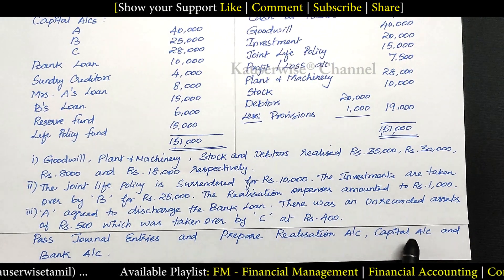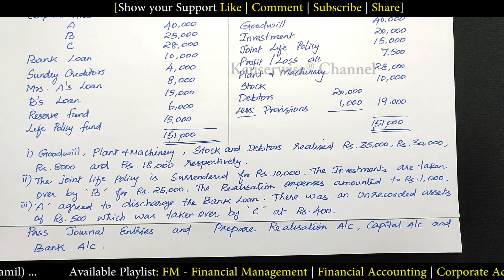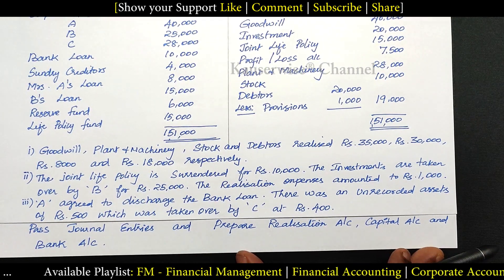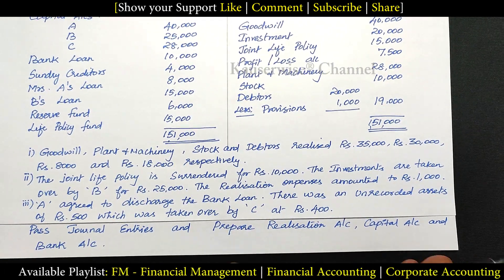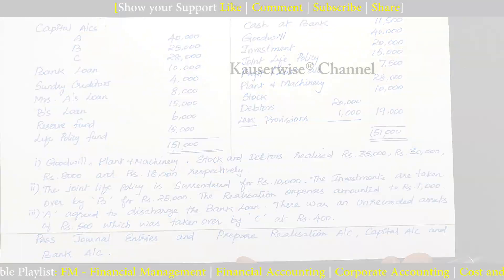With this information, they are asking us to pass journal entries and prepare realization account, capital account and bank account. These are the three important ledgers we need to prepare for dissolution of a partnership firm.